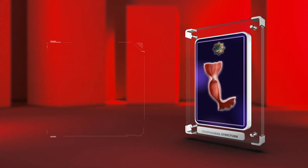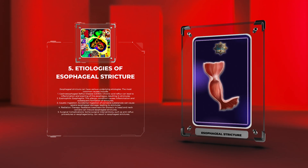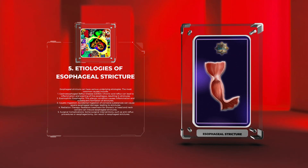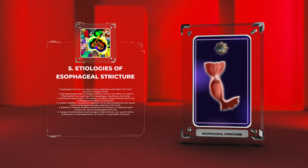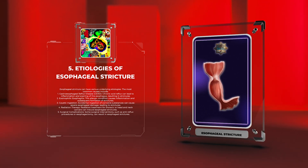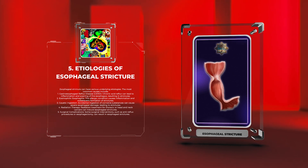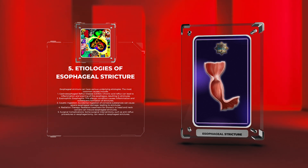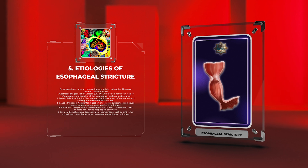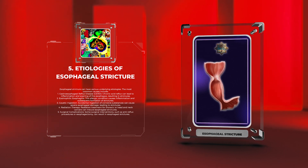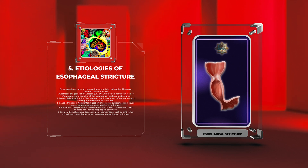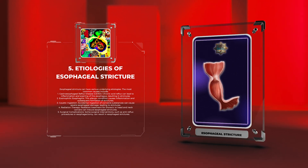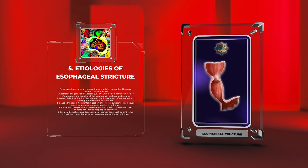Esophageal stricture can have various underlying etiologies. The most common causes include: 1. Gastroesophageal reflux disease (GERD) — chronic acid reflux can lead to inflammation and scarring of the esophagus, resulting in strictures. 2. Eosinophilic esophagitis — this allergic condition causes inflammation and subsequent formation of strictures. 3. Caustic ingestion — accidental ingestion of corrosive substances can cause severe esophageal damage leading to strictures. 4. Radiation therapy — radiation treatment for thoracic or head and neck cancers can induce esophageal strictures. 5. Surgical complications — some surgical interventions, such as anti-reflux procedures or esophagectomy, can result in esophageal strictures.